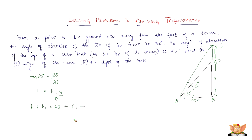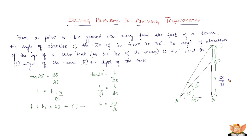Now let's take tan 30 degrees. Tan 30 applies to triangle BCA only, so that is BC/AB, which is H/40. Tan 30 is 1/√3, so 1/√3 = H/40, giving us H = 40/√3. We've found the height of the tower to be 40/√3 meters.